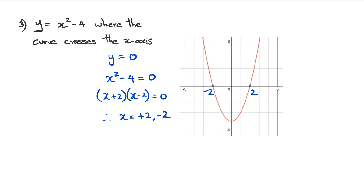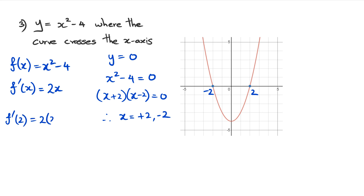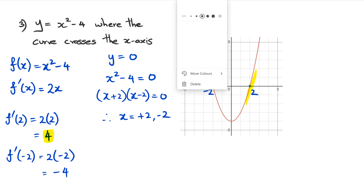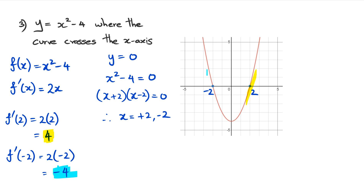Now we find the gradients at those two points. Differentiating f(x) equals x squared minus four gives f′(x) equals two x — the four becomes zero. The gradient at x equals two is two times two, which equals four. The gradient at x equals negative two is two times negative two, which equals negative four. As you can see, the gradient of four is right there and the gradient of negative four is along the other side.